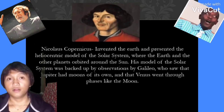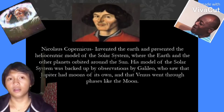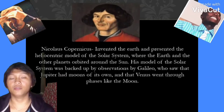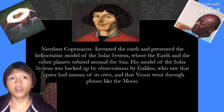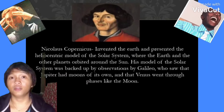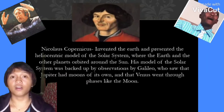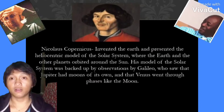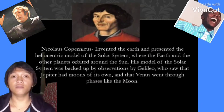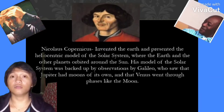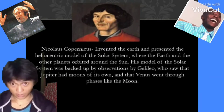Starting with Nicholas Copernicus, who invented the heliocentric model of the solar system, where the Earth and the other planets orbited around the Sun. His model of the solar system was backed out by observations by Galileo, who saw that Jupiter had moons of its own, and that Venus went through phases like the moon.